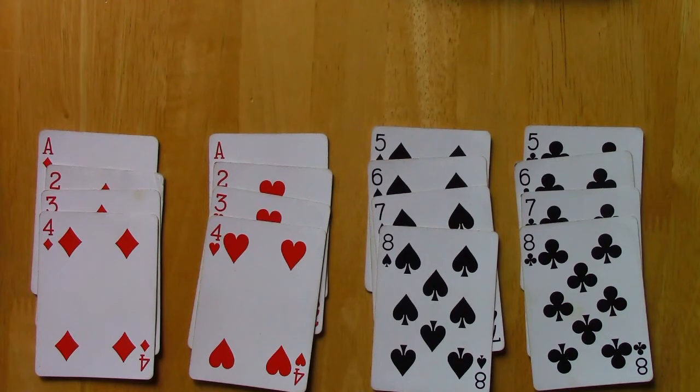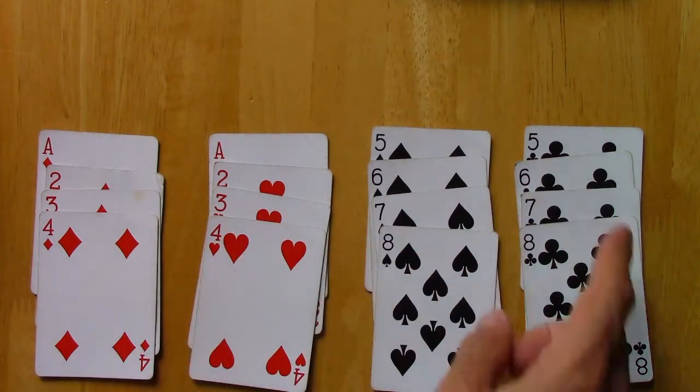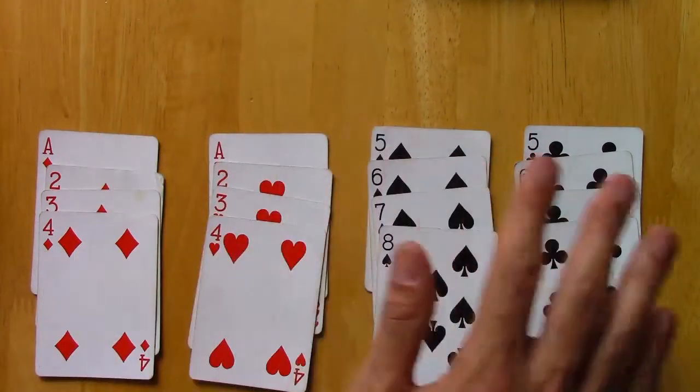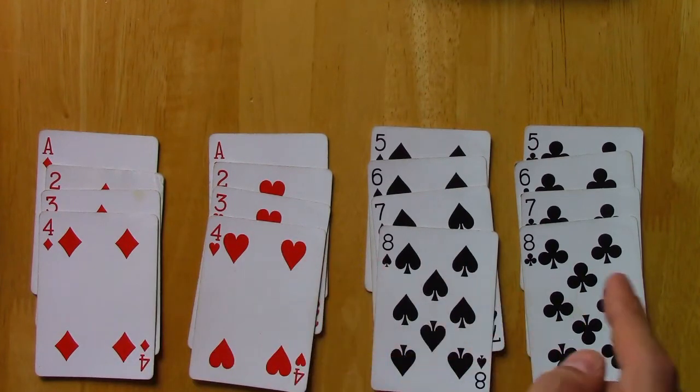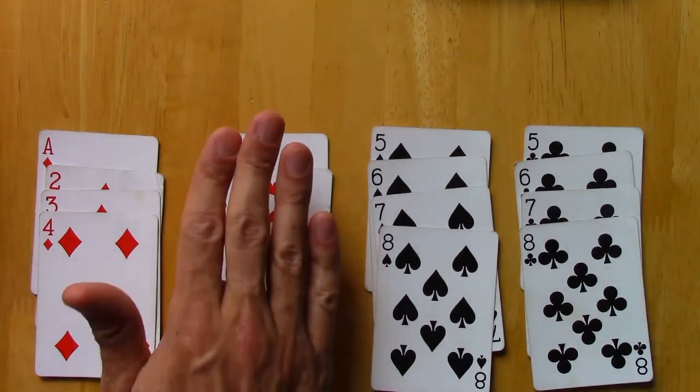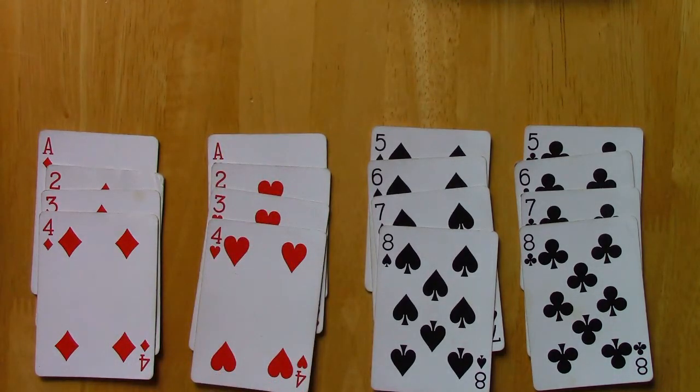And the last possibility that I'll talk about is clustered sampling. So we could, instead of just sort of picking cards at random, either from the full population or from a subpopulation, what we could do is we could pick at random, pick one of the four suits, and then just take everybody in that suit.